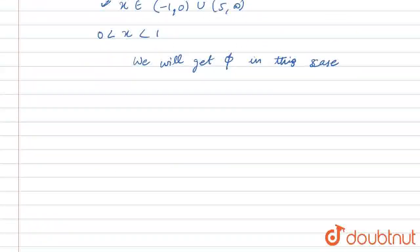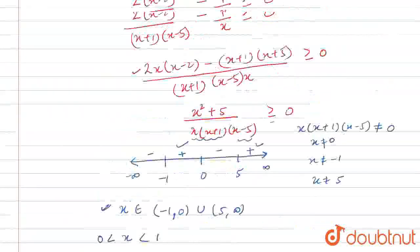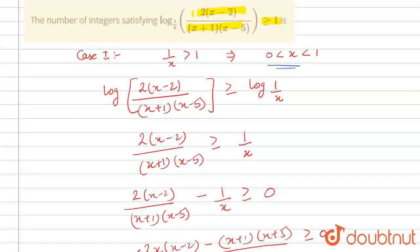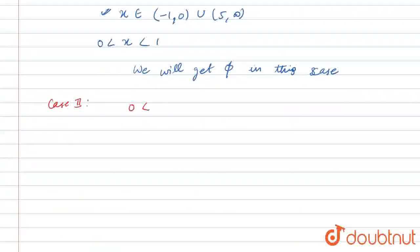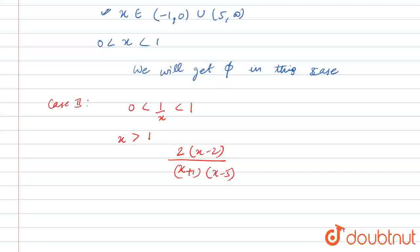Now we will consider the second case. Case 2 is where 1/x is greater than 0 but less than 1, which means x is greater than 1. So our expression is 2x minus 2 times (1/(x+1)) times (x minus 5), and all these things are in log function with base log(1/x). We now rewrite this equation.